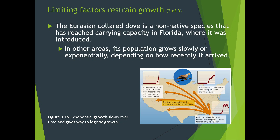The Eurasian collared dove is a non-native species that reached the carrying capacity of Florida where it was introduced, then had to seek out other habitats. Its population grew exponentially each time it arrived in a new area of the United States, then the J-curve turned over into an S-curve once it reached carrying capacity in each location.